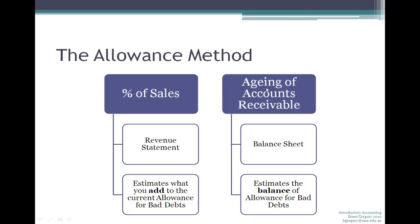Or whatever period you're looking at. The ageing of receivables method is also referred to as the balance sheet method. What it estimates is your total allowance for bad debts. So your revenue statement estimates how much bad debt you add to your allowance each month, while the balance sheet method looks at what your current balance is.